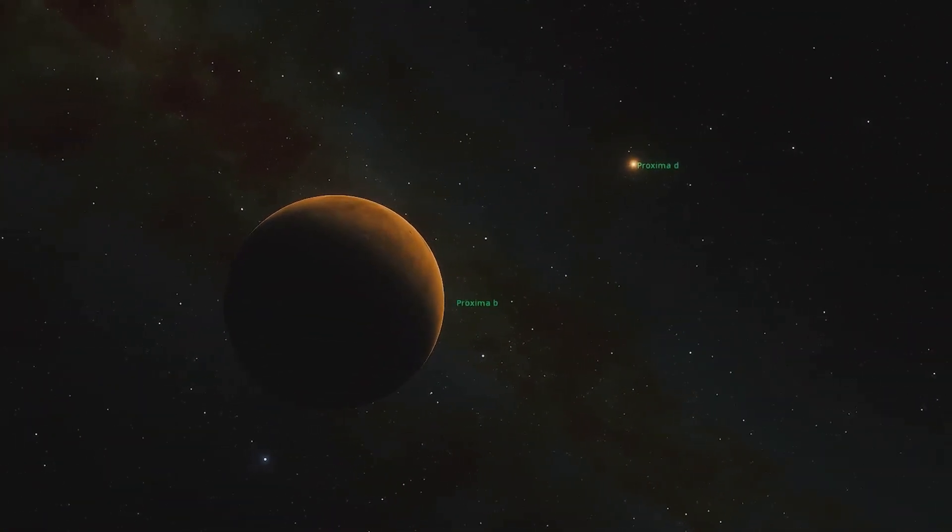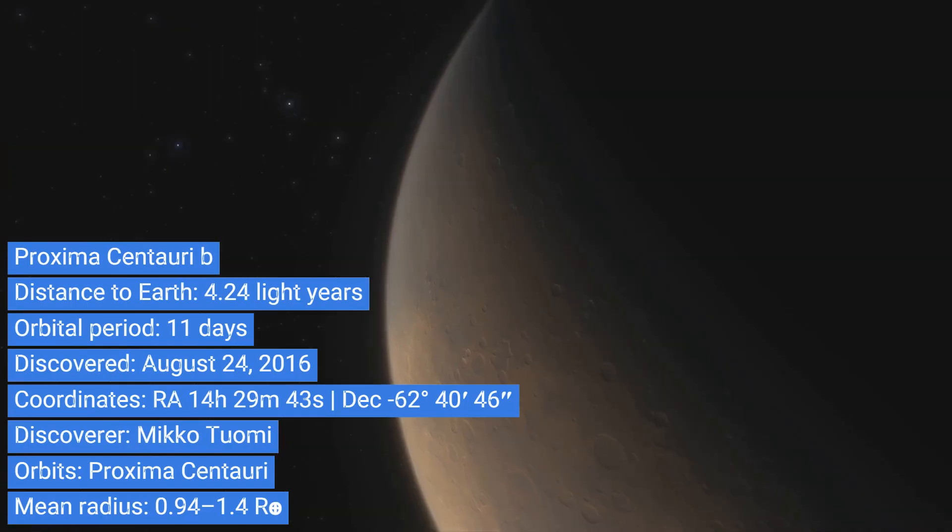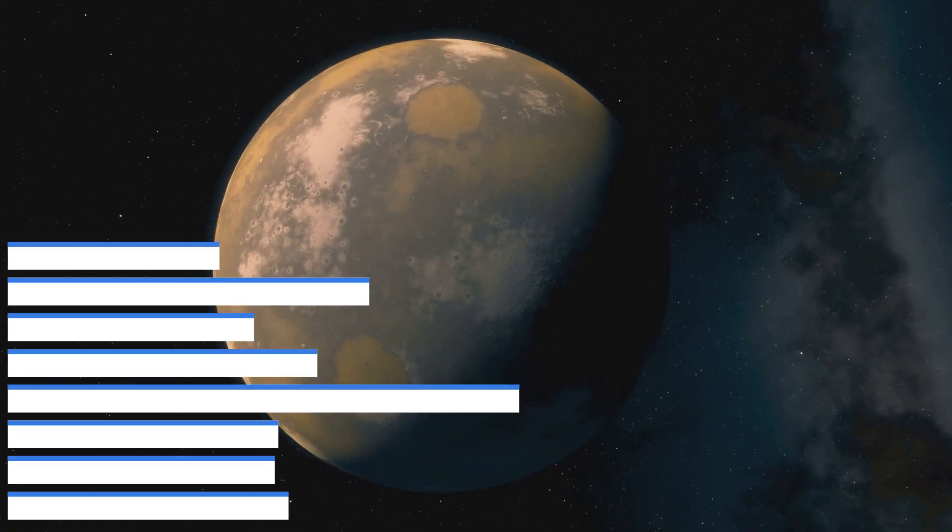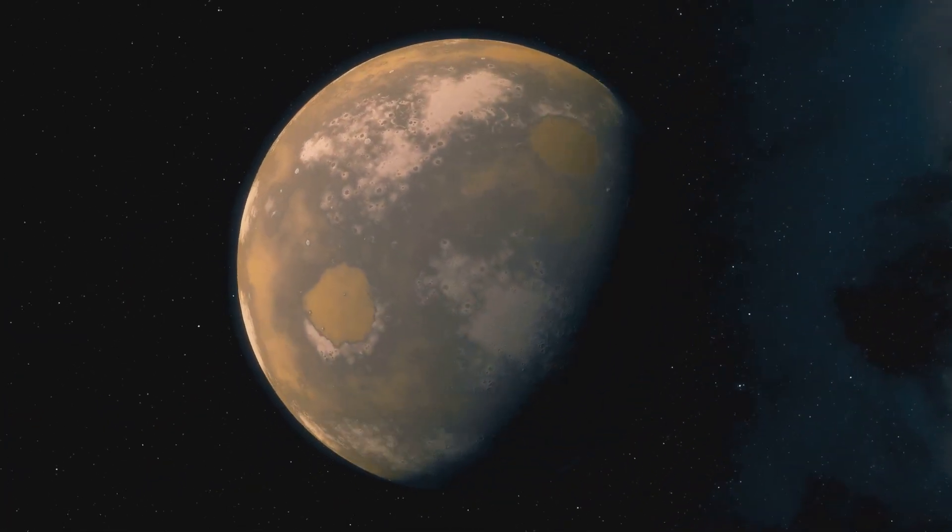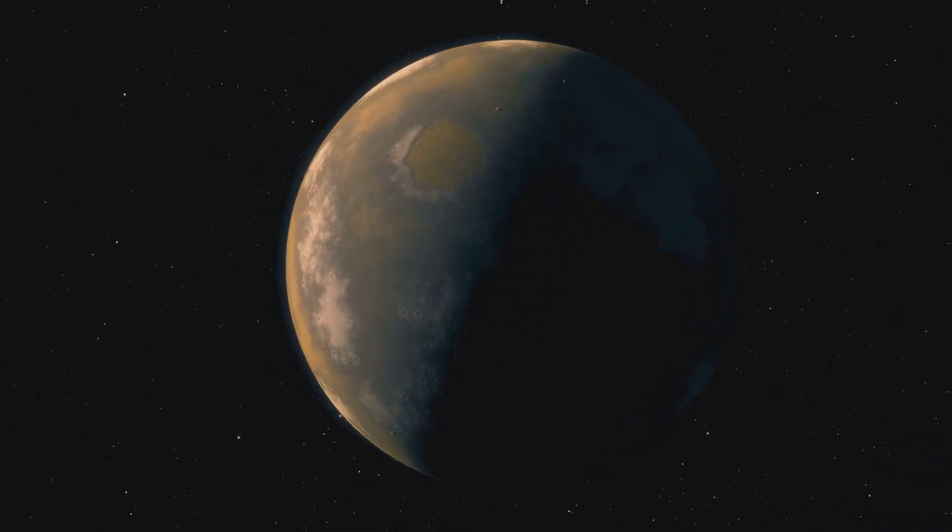Next up is Proxima Centauri b, our closest exoplanet neighbor. Just over four light-years away, this rocky sphere could potentially host liquid water. Proxima Centauri b, with its tantalizing similarities to Earth, makes us wonder what secrets lie just a cosmic stone's throw away.